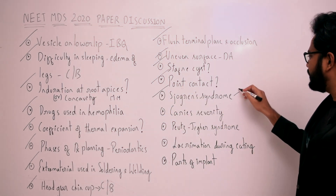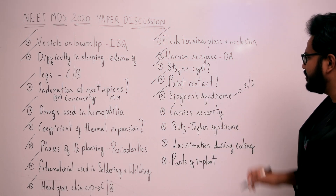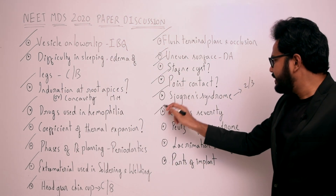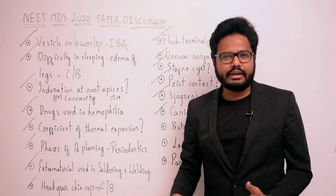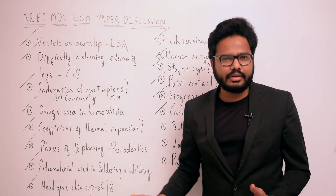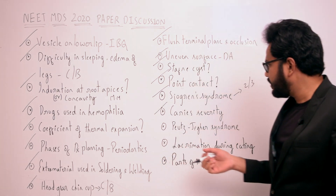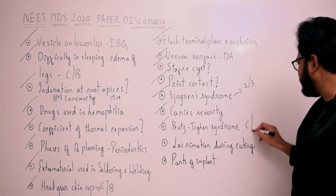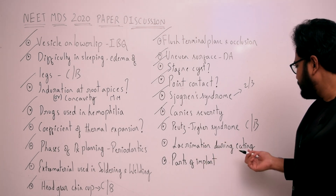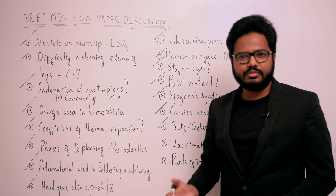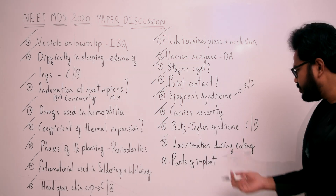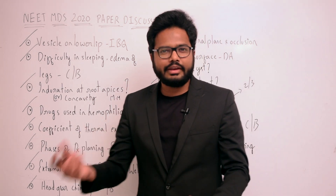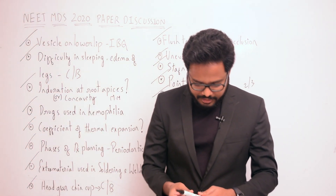Joblin syndrome — there seem to be two or three questions on that, so check it out and update me accordingly. Caries severity — was that related to an index or a case-based question? Check it out and let me know. Peutz-Jeghers syndrome — there seems to be a case-based question. Lacrimation during eating — I guess that's a case-based question as well. And parts of implant — was there a separate question on that? Any additional keywords, do let me know.